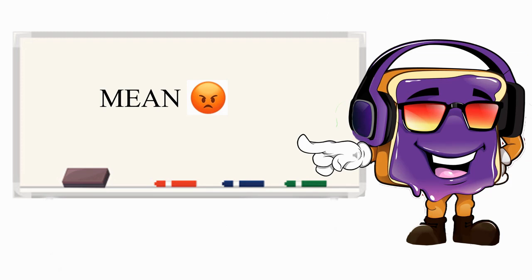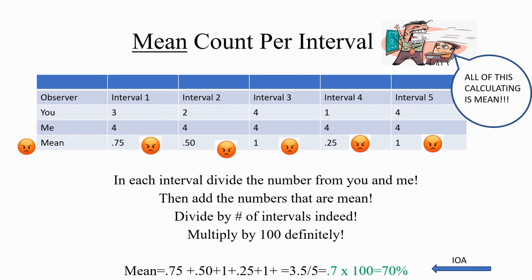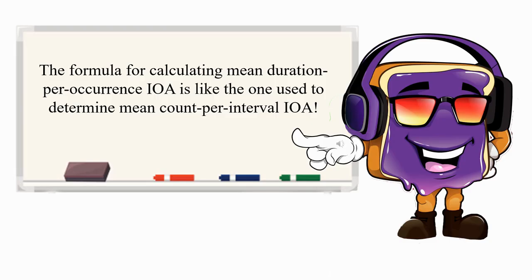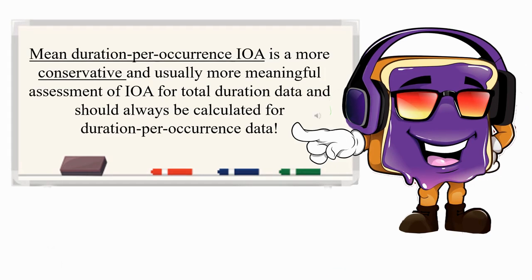For mean count per interval IOA, in each interval divide the smaller number by the larger number, then add those values and divide by the number of intervals, then multiply by 100. The formula for calculating mean duration per occurrence IOA is similar. Mean duration per occurrence IOA is a more conservative and usually more meaningful assessment of IOA for total duration data, and it should always be calculated for duration per occurrence data.